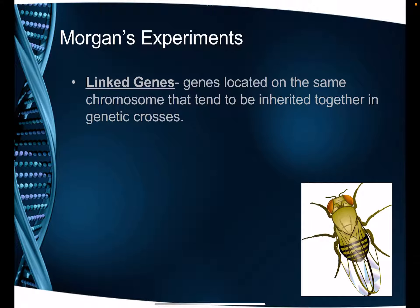Hi science friends, today we are going to talk about something called linked genes. Now do not get this confused with sex-linked genes — that's what we talked about last class, where you did the Punnett squares with X and Y and drew your little letters as superscript. Those are genes on the sex chromosomes. These linked genes are for the most part going to be on the autosomes.